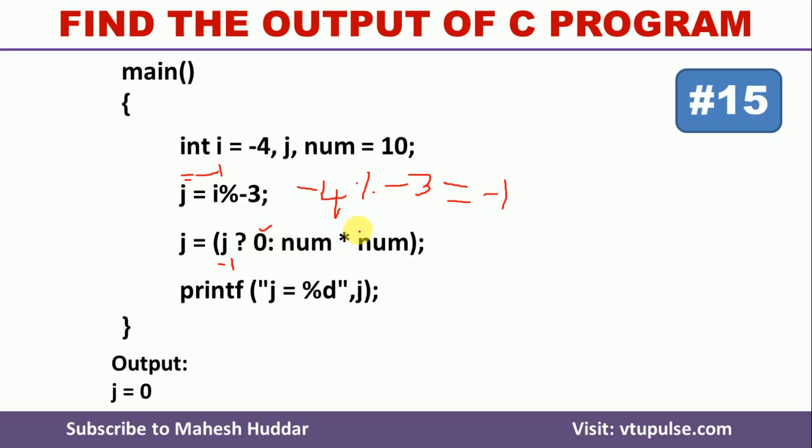So one thing we can understand from this particular program is how to calculate the mod whenever we have minus on numerator and denominator, as well as anything other than 0 is considered as true in C programming language. The positive numbers or negative numbers, all of them are considered as true. Only 0 is considered as false.